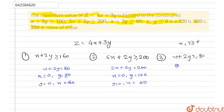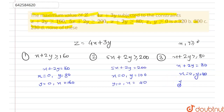Similarly, for the third equation, we draw the line x plus 2y = 80. We find the coordinates: when x equals 0, then y equals 40, and when y equals 0, then x equals 80.